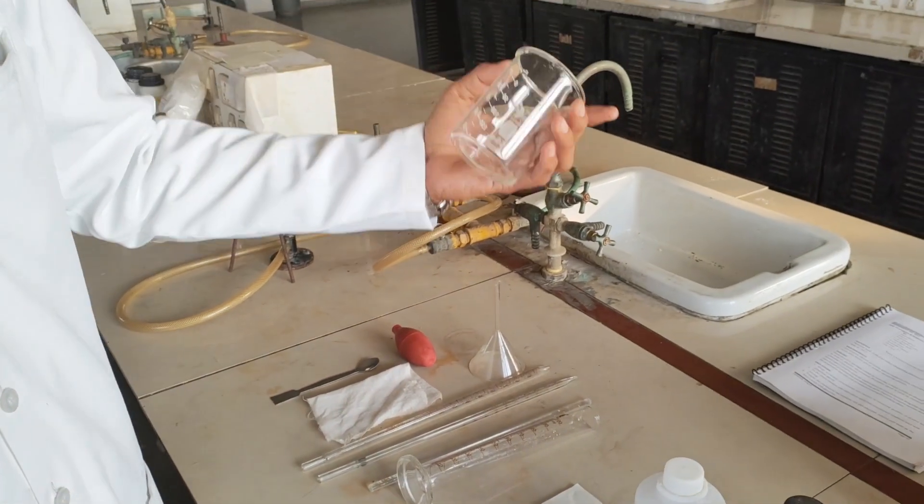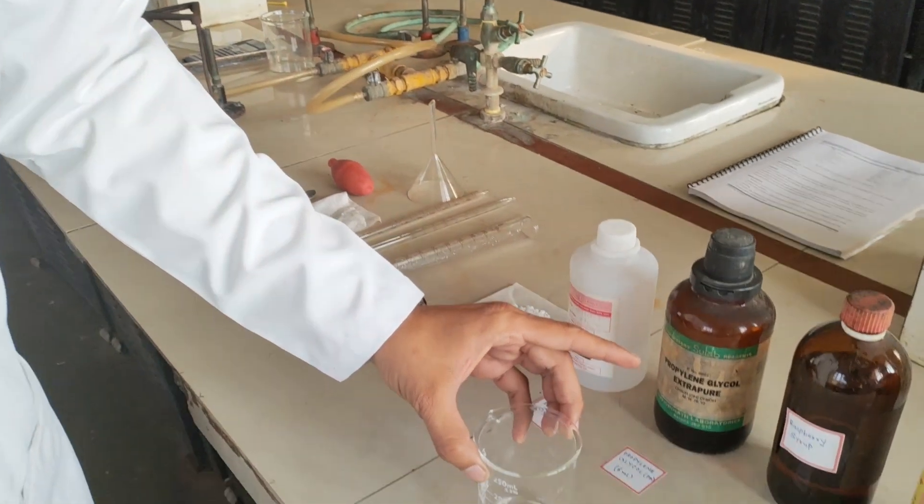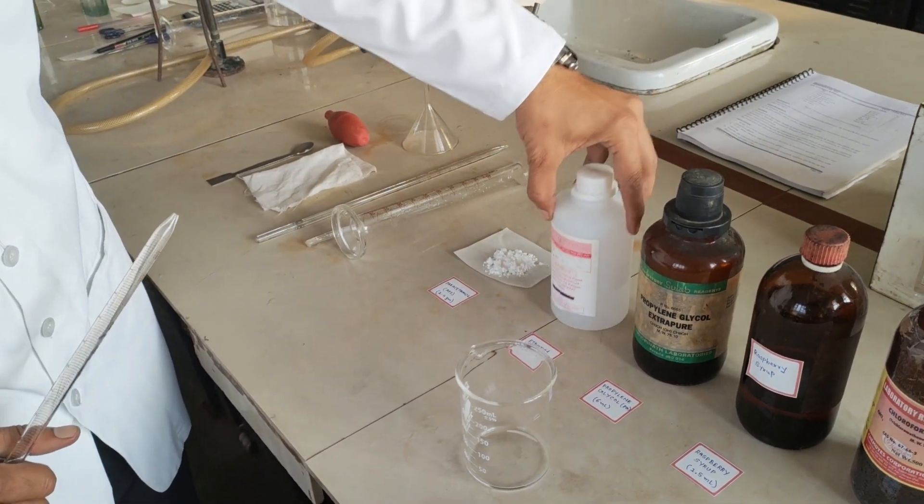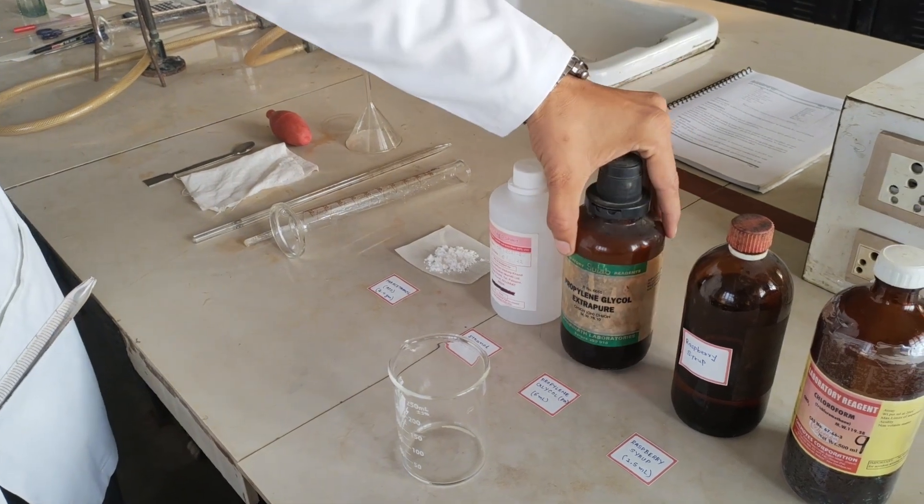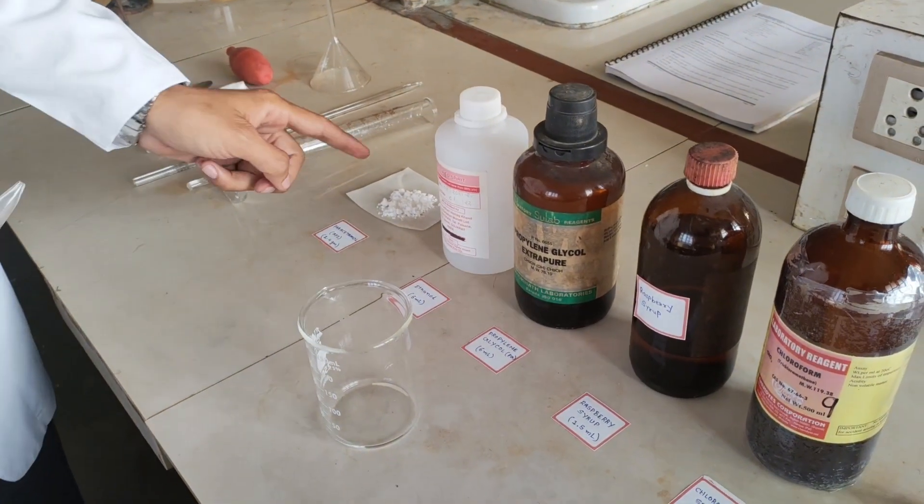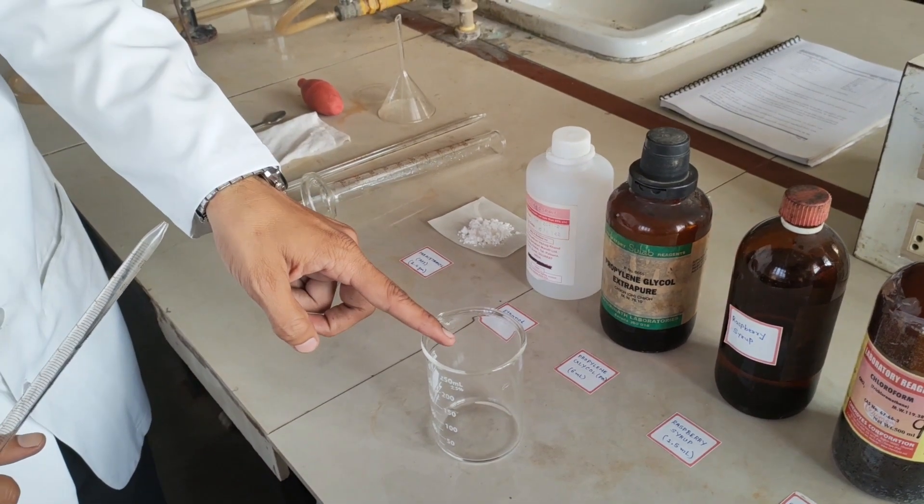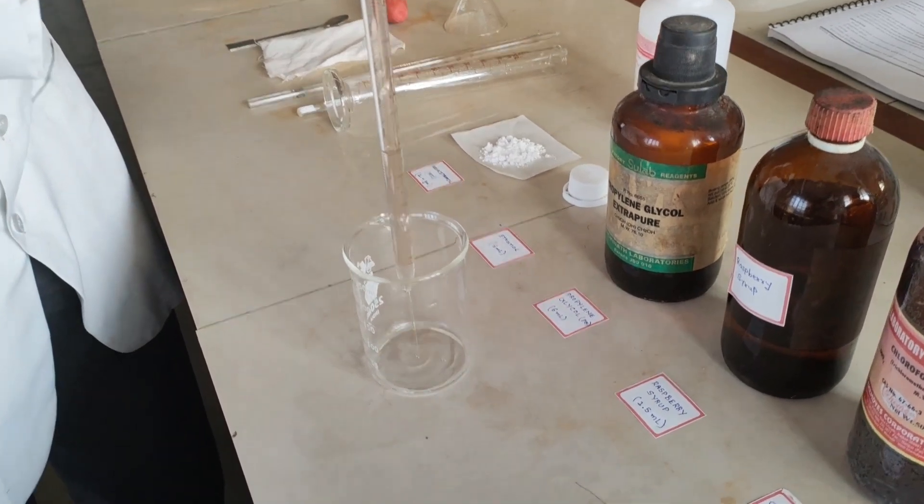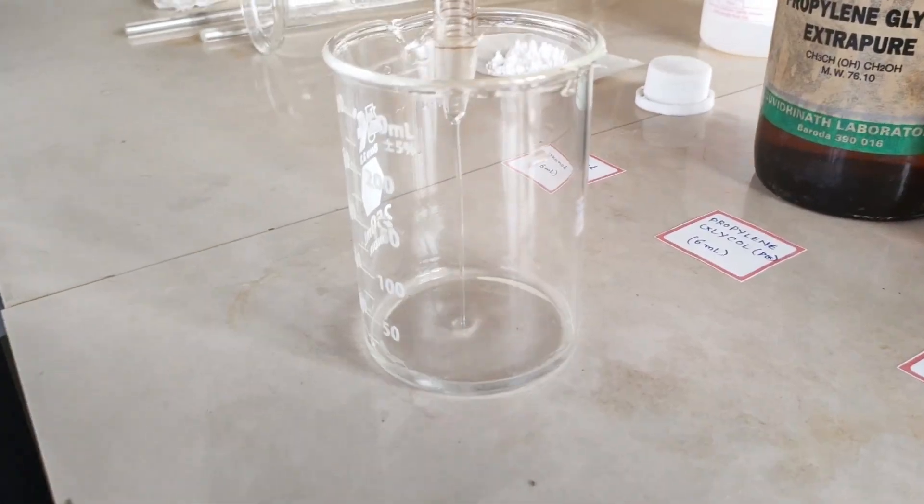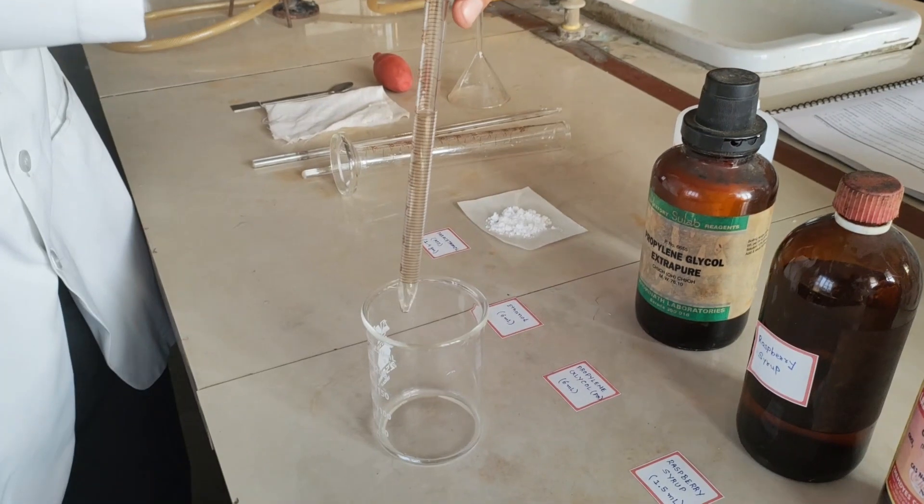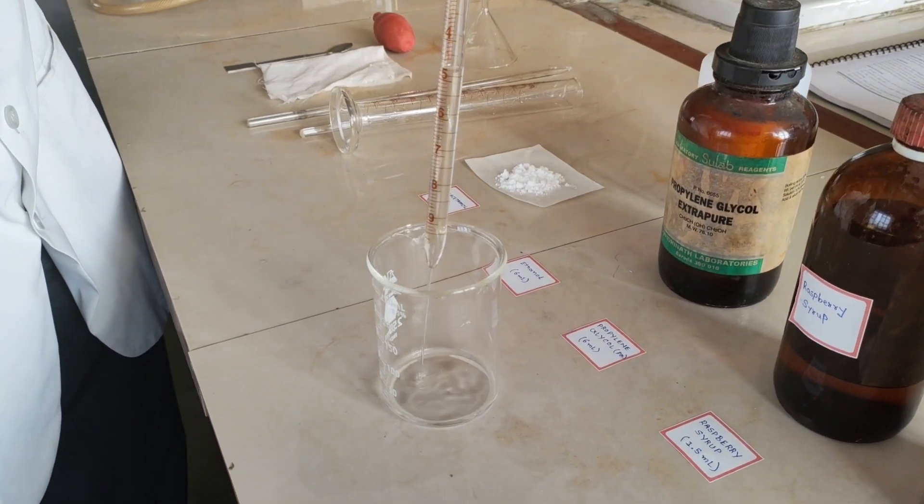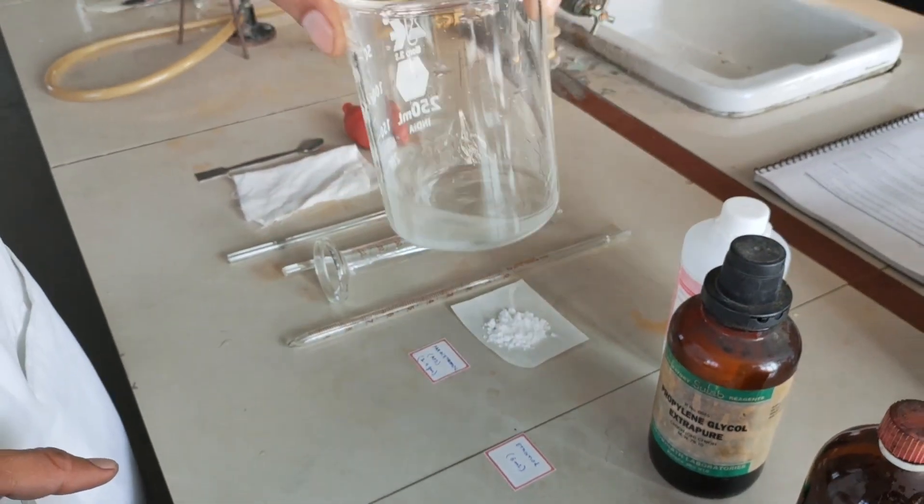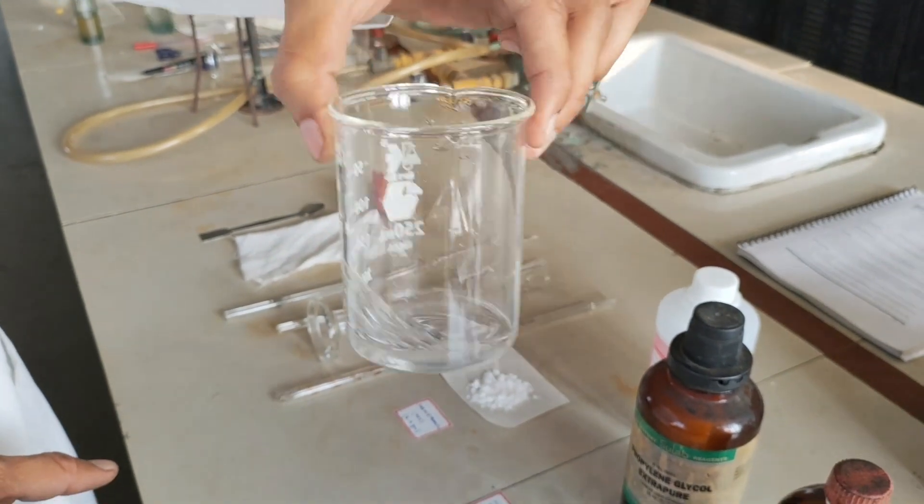Let's start the preparation. Take one beaker. We are going to use ethanol and propylene glycol, both 6ml. Add them and dissolve paracetamol in this mixture. Mix propylene glycol and ethanol together.